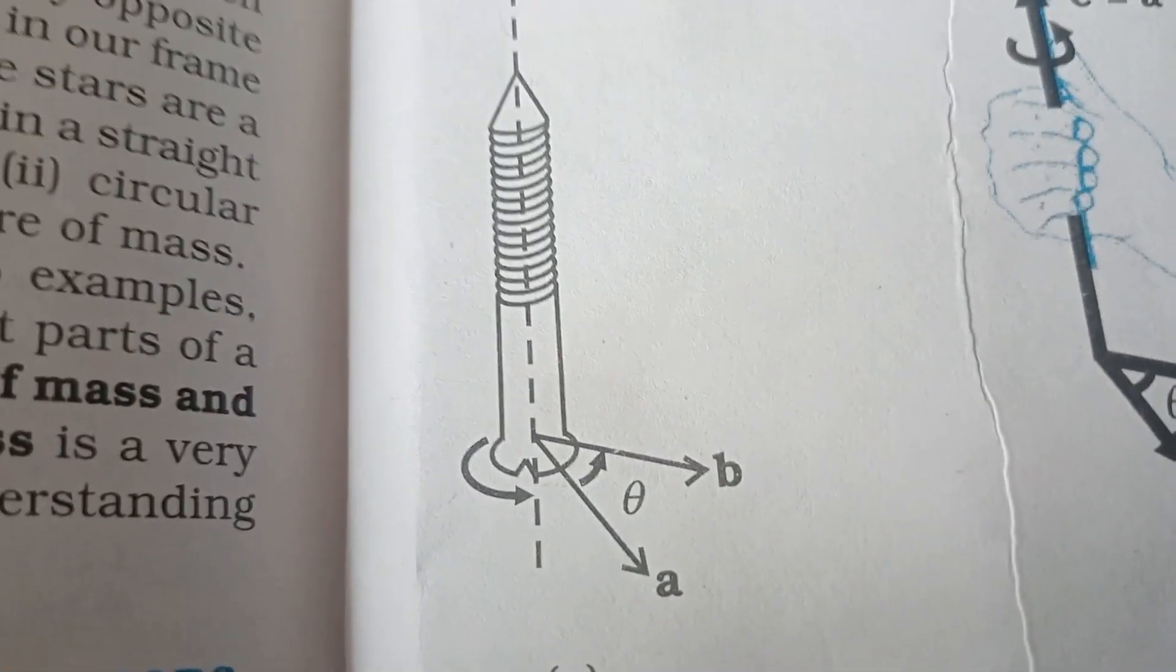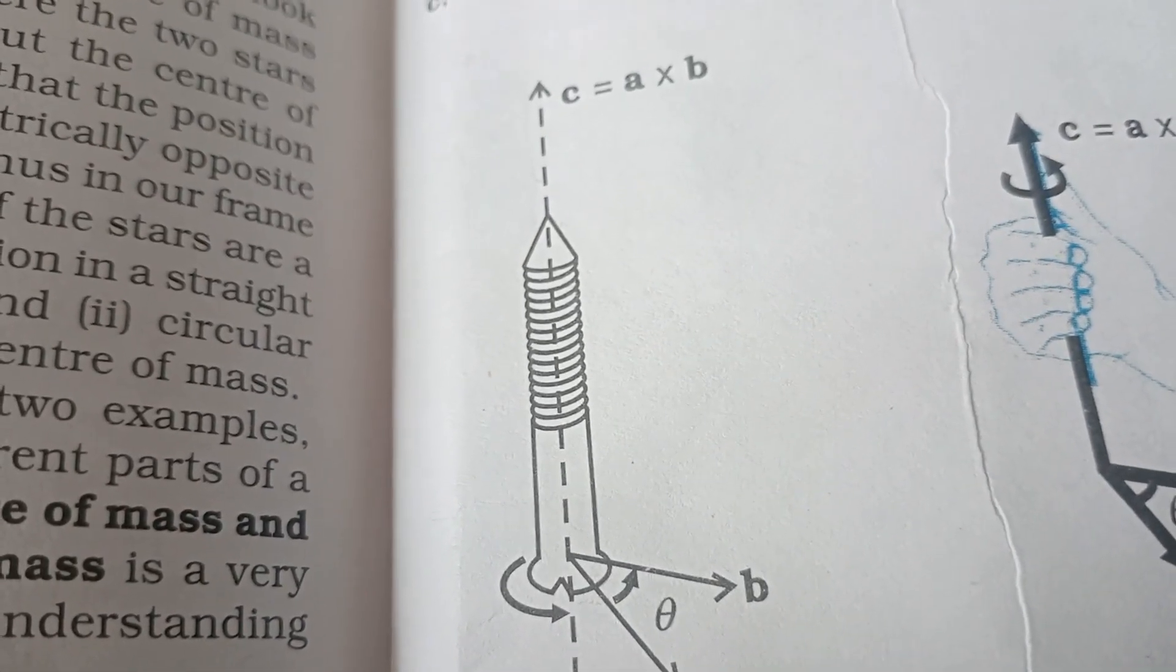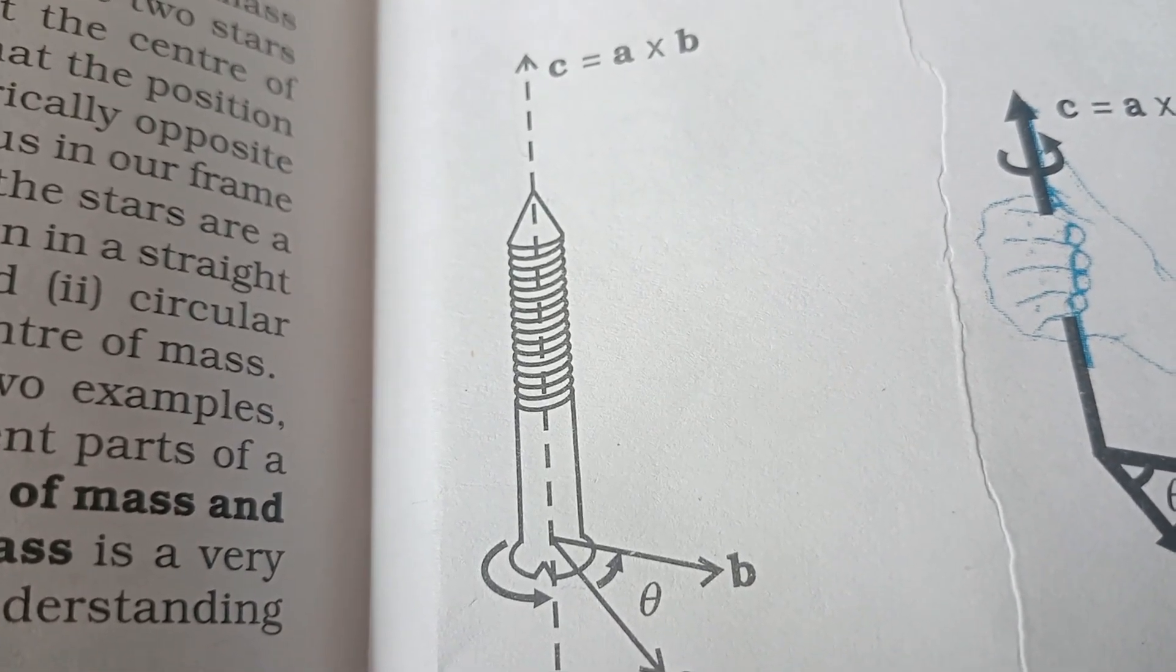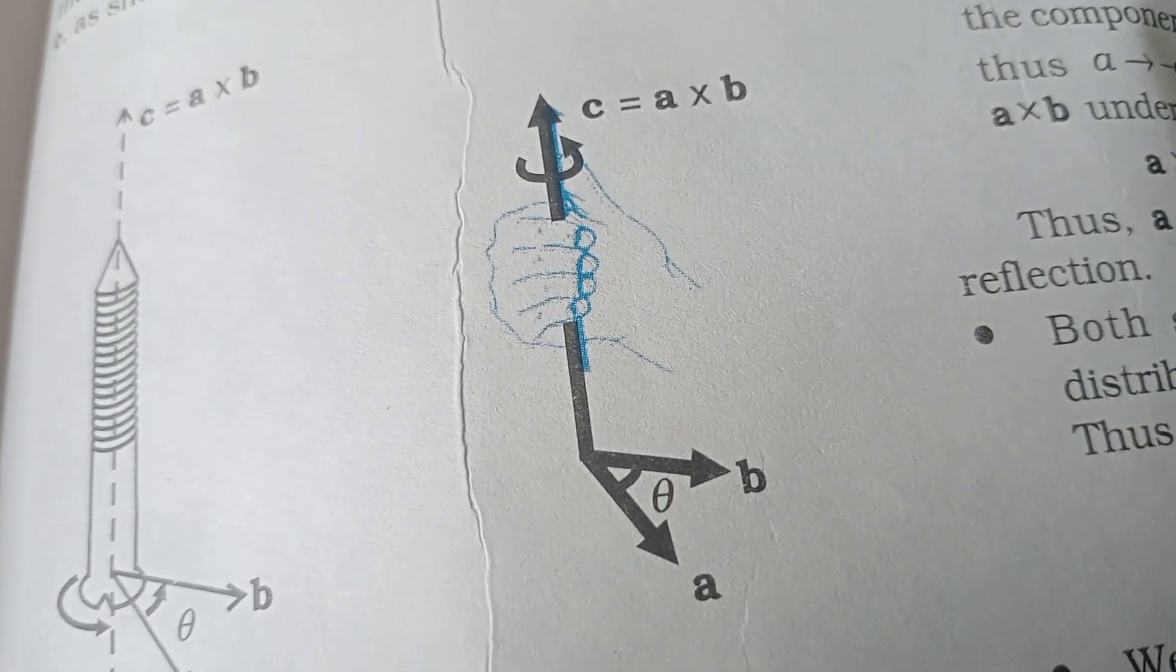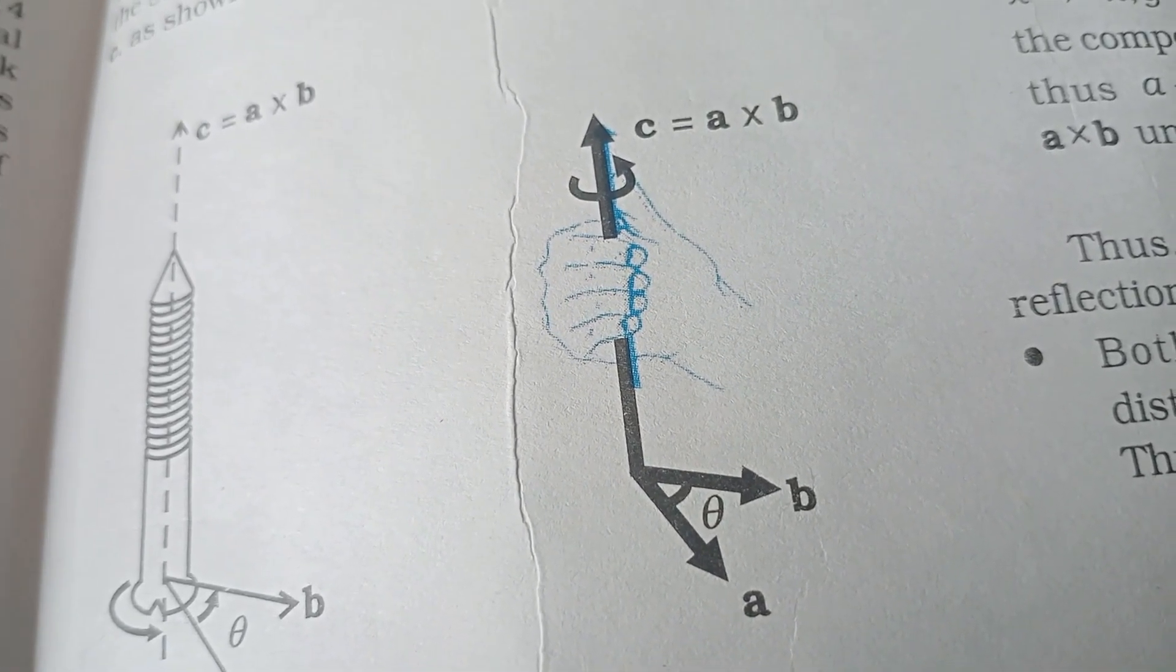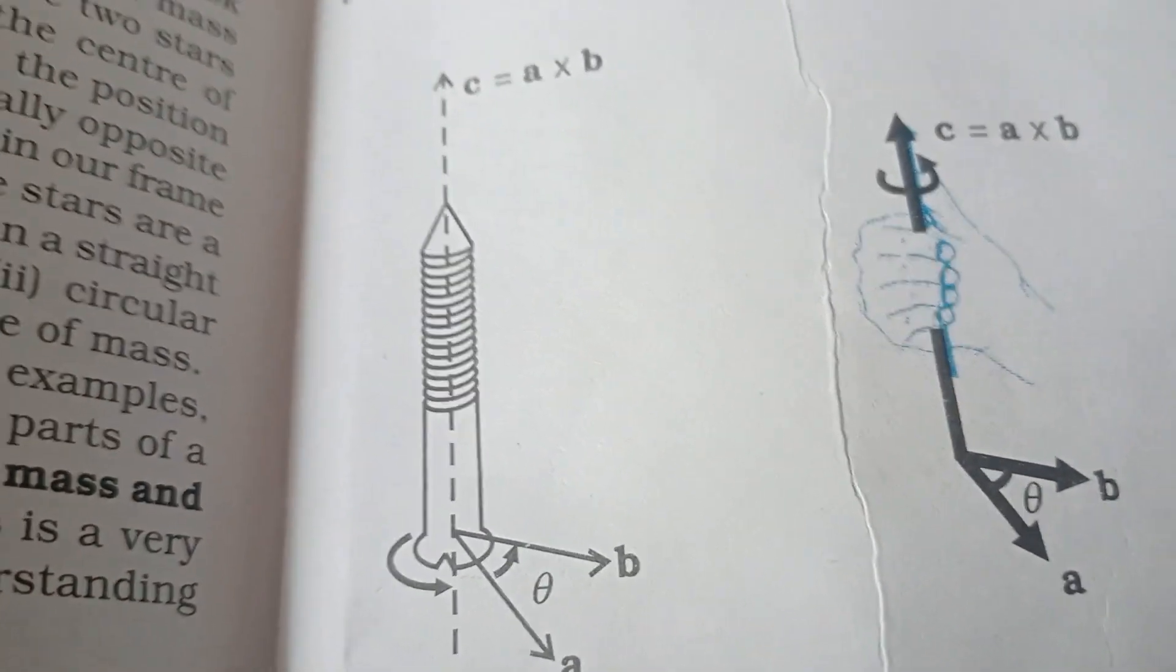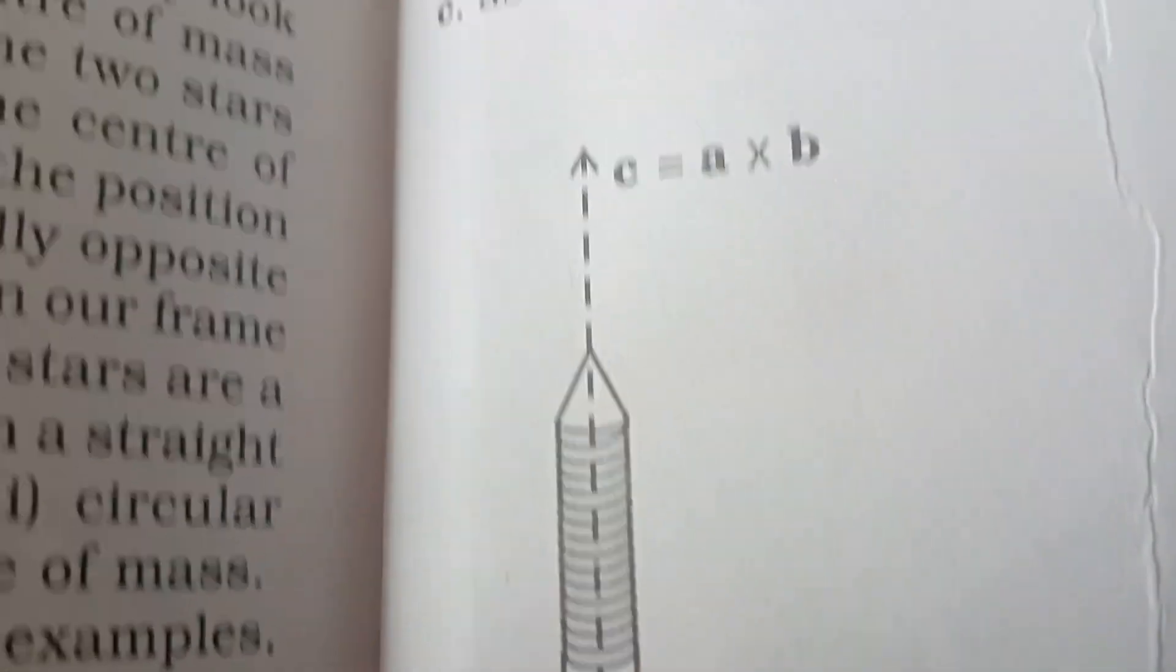Look at this screw. When we move it in the A to B direction, the screw moves inward. The direction of the resultant vector C is in the direction the screw is moving. You can also use the right-hand thumb rule to determine C's direction. The resultant vector is perpendicular to both vectors, in the plane where A and B are perpendicular to C's direction.